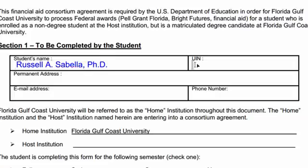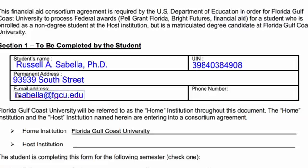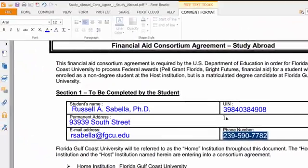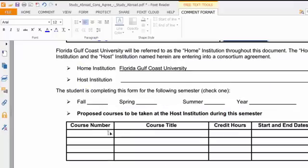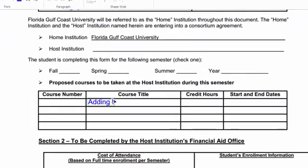You can click anywhere and type in information like a phone number, permanent address, or email address — it's very easy to complete a form this way. You can double-click to highlight text and change font colors just like in Microsoft Word, and change different features of those fonts. As you scroll down, you can keep adding text no matter where you are in the PDF.